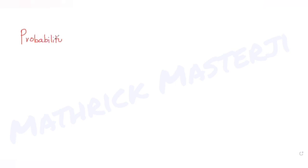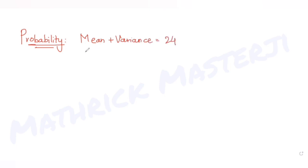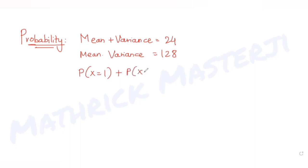Hi guys, I hope you are all doing well. Today's question is from the topic of probability. The question tells us that if the sum of mean and variance of a binomial distribution is given as 24, and the product of mean and variance is given as 128, then the probability of either one success or two successes is asked — that is P(X=1) or P(X=2).